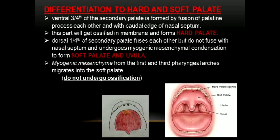The ventral three-fourths of the secondary palate fuse with the caudal edge of the nasal septum, and this ventral three-fourths portion gets ossified by membranous ossification and is converted into the hard palate. However, the dorsal one-fourth portion of the secondary palate fuses with each other but does not fuse with the nasal septum cranially. This posterior one-fourth part undergoes mesenchymal condensation to form the soft palate and the uvula — so the anterior part gets ossified to form the hard palate, while the posterior part remains as soft palate without ossification, along with the uvula.